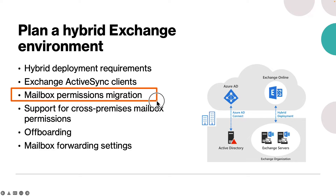The third consideration is mailbox permissions migration. On-prem mailbox permissions that are explicitly applied to the mailbox are migrated to Exchange Online. These permissions include Send As, Full Access, Send on Behalf Of, and folder permissions. Verify that all permissions are explicitly granted and all objects are mail-enabled before migration.